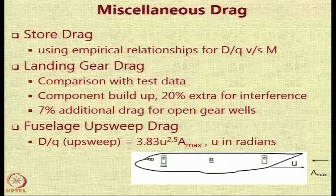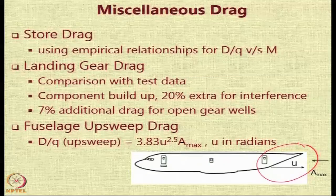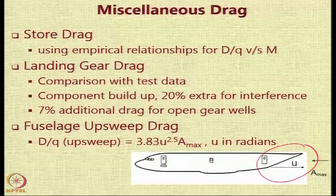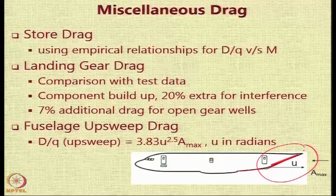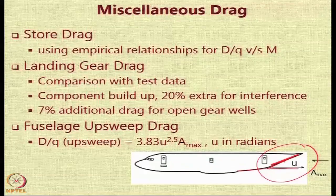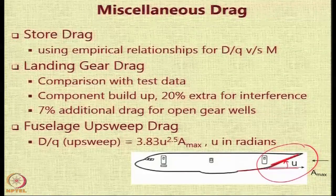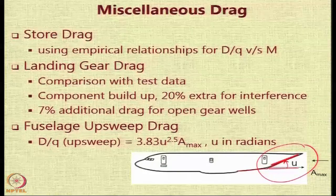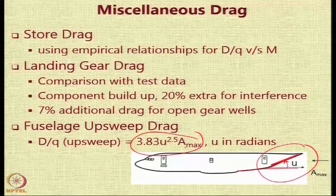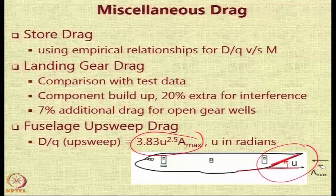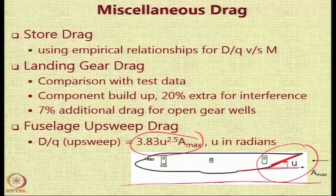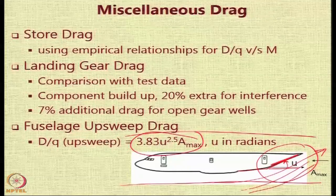Another cause of high drag is fuselage upsweep, seen in many cargo transport aircraft where a rear door requires an abrupt change in angle. The upsweep angle U is used in a formula for D/Q of the upsweep (with U in radians), where A_max is the cross-sectional area at that location. The air flowing past the aircraft is suddenly made to turn upward, causing this additional drag called fuselage upsweep drag.